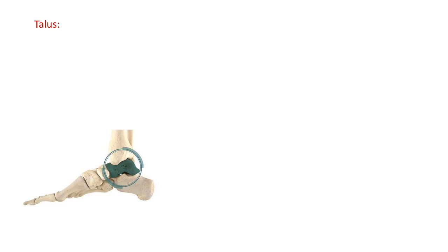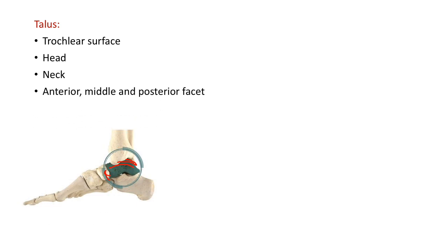The next and very important bone is the talus. Its trochlear surface is the superior surface — a dome-shaped surface which articulates with the tibia to form the ankle joint. It has a head anteriorly which articulates with the navicular bone, a neck, and importantly three facets: anterior, middle, and posterior. These facets are situated inferiorly and articulate with the calcaneum bone to form the subtalar joint.